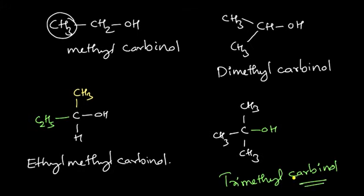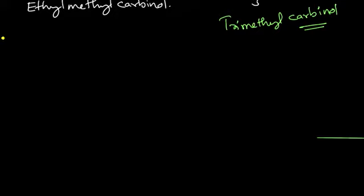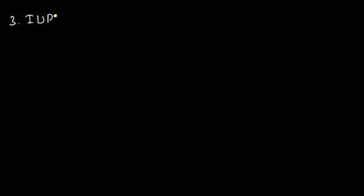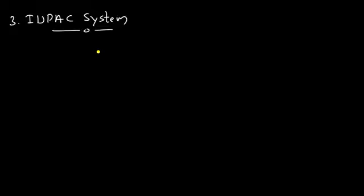The third system is the IUPAC system, which is the most important for studying the various names of different types of alcohols. According to IUPAC nomenclature, alcohols are named as alkanols: take the parent alkane name, remove the final 'e', and add 'ol' to get alkanol.